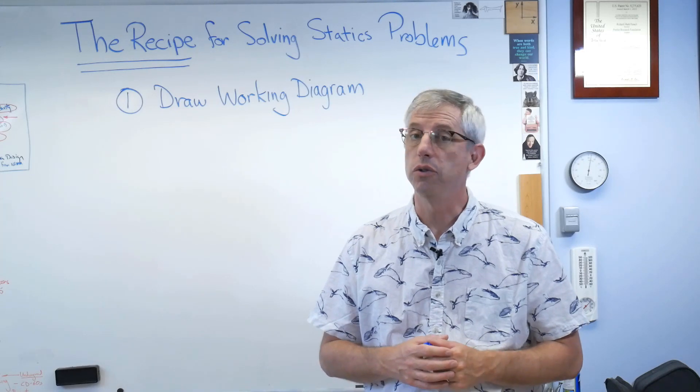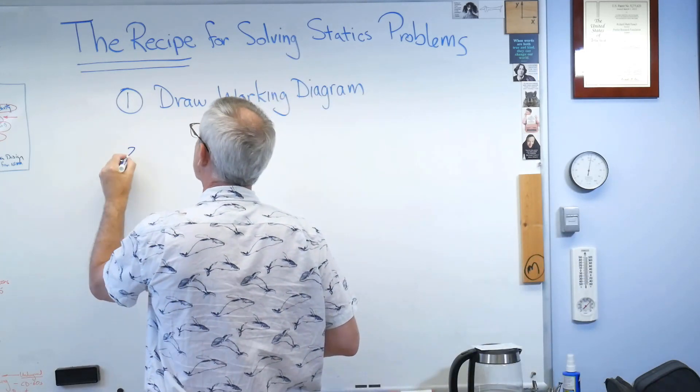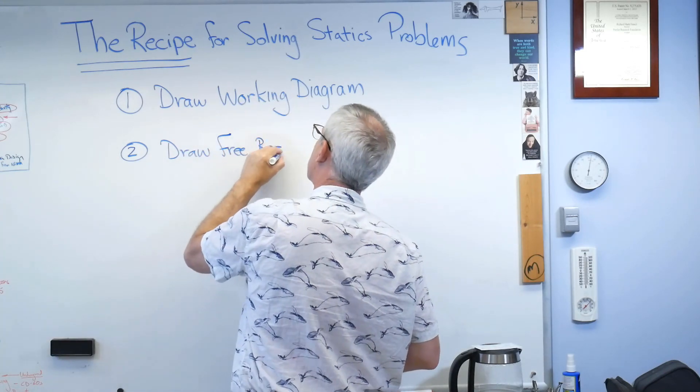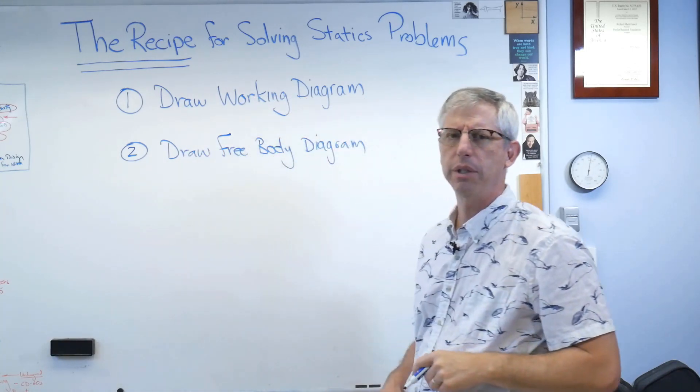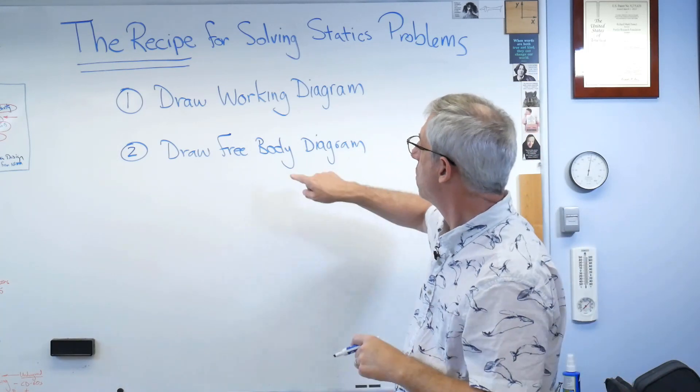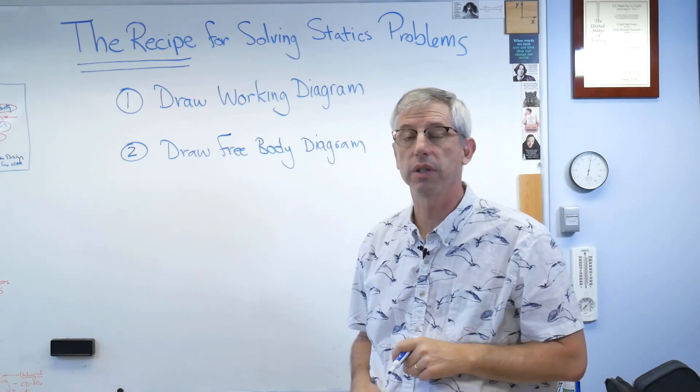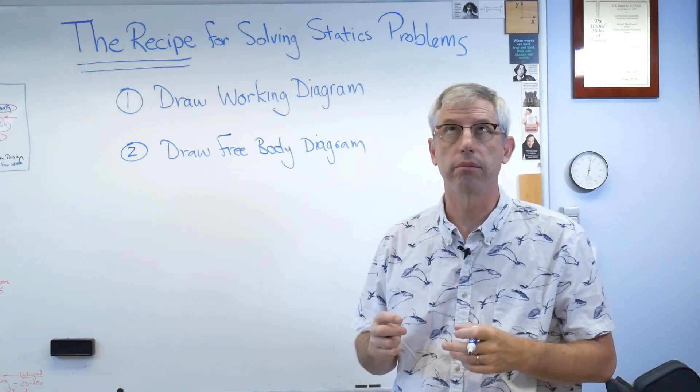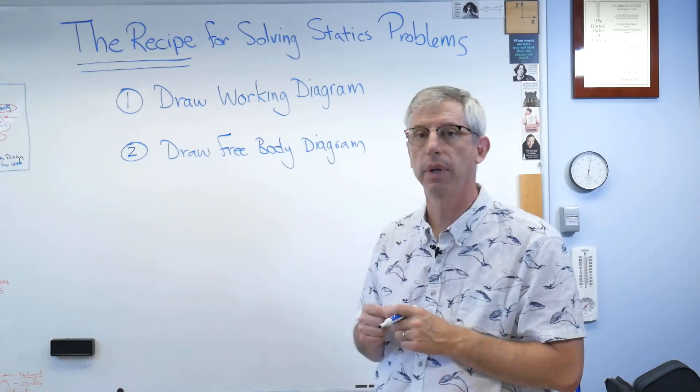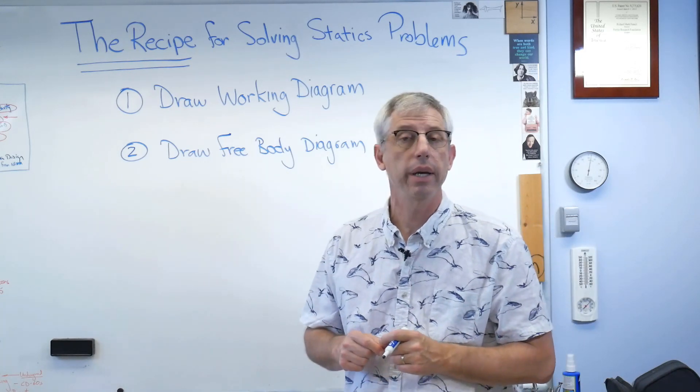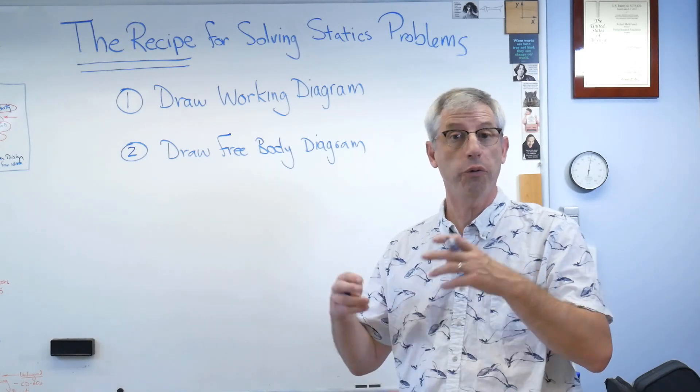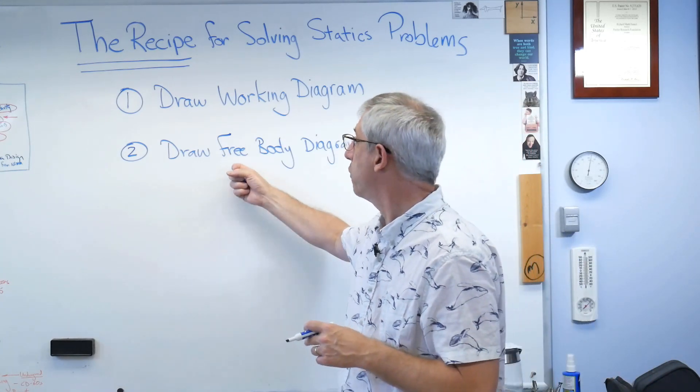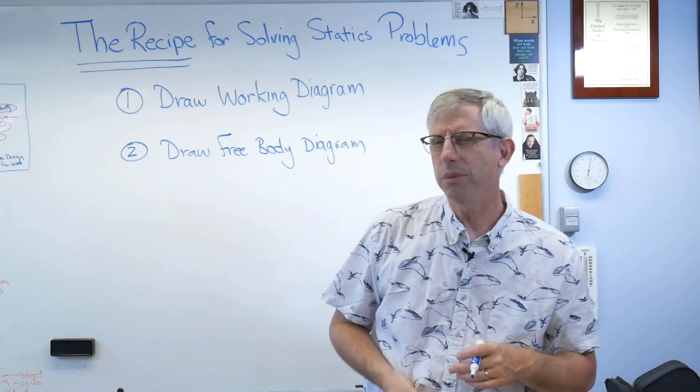Step two, draw a free body diagram. Now what's a free body diagram? This is a much reduced version of this. It contains only the body that you're trying to find forces of, on. And the important part is that the body has been cut free of its surrounding structure. It's kind of floating in space. That's what makes it a free body diagram.